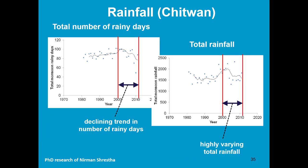Here we see historical rainfall — the total number of rainy days and the total rainfall. In the last decade there was much more uncertainty, resulting in strong variations of the yield, which motivates yield forecasting.